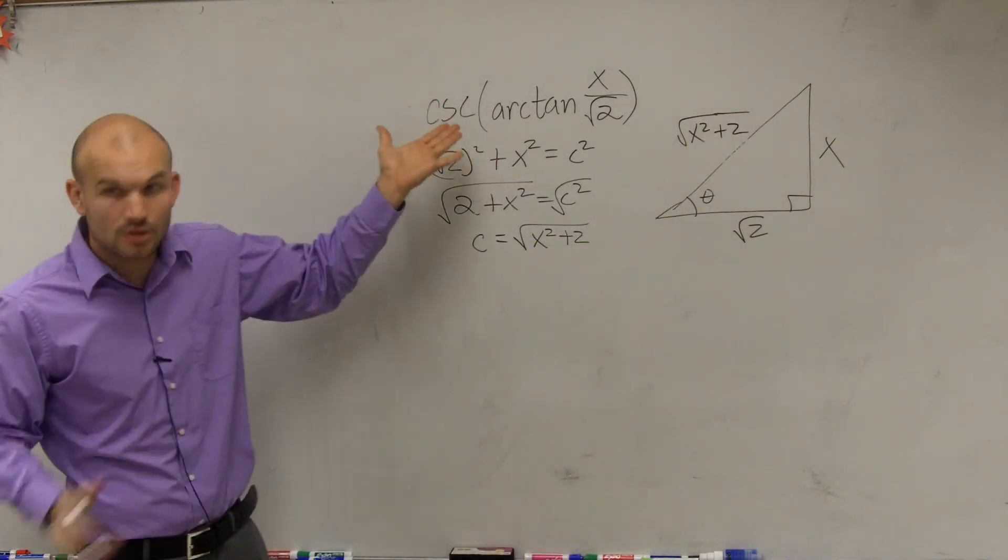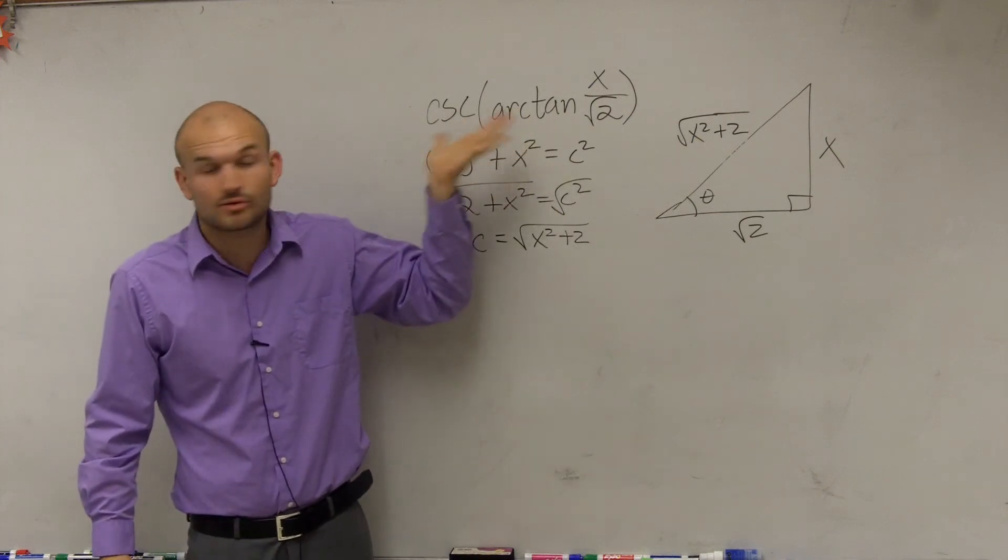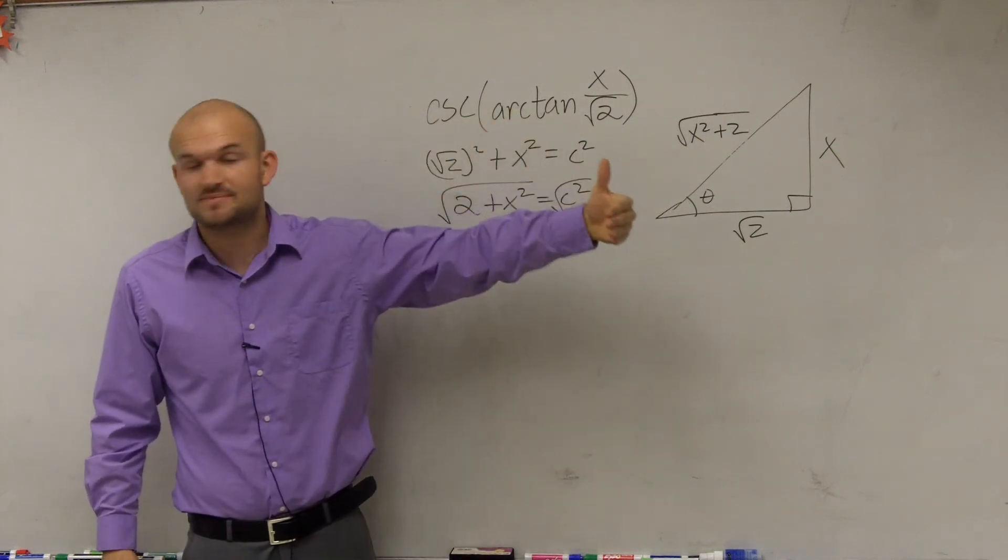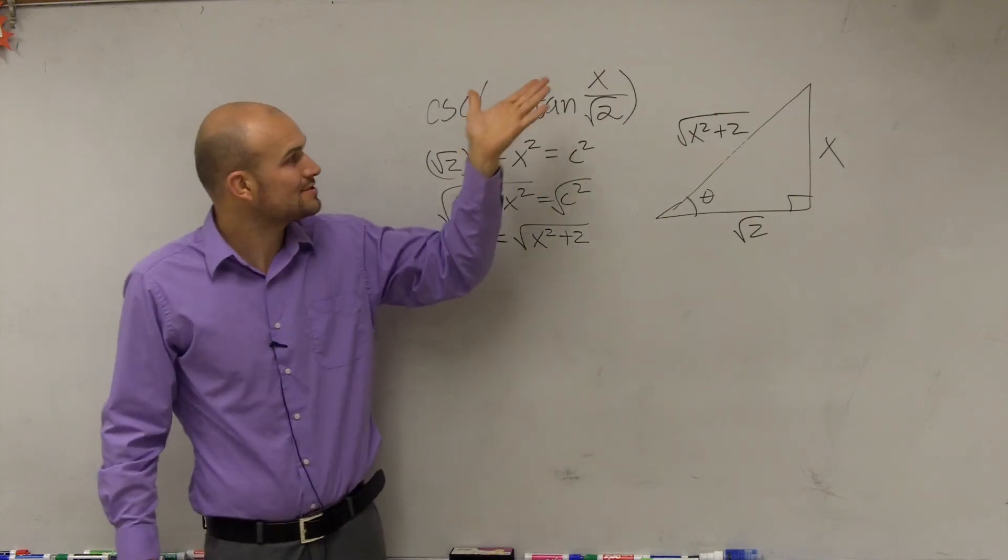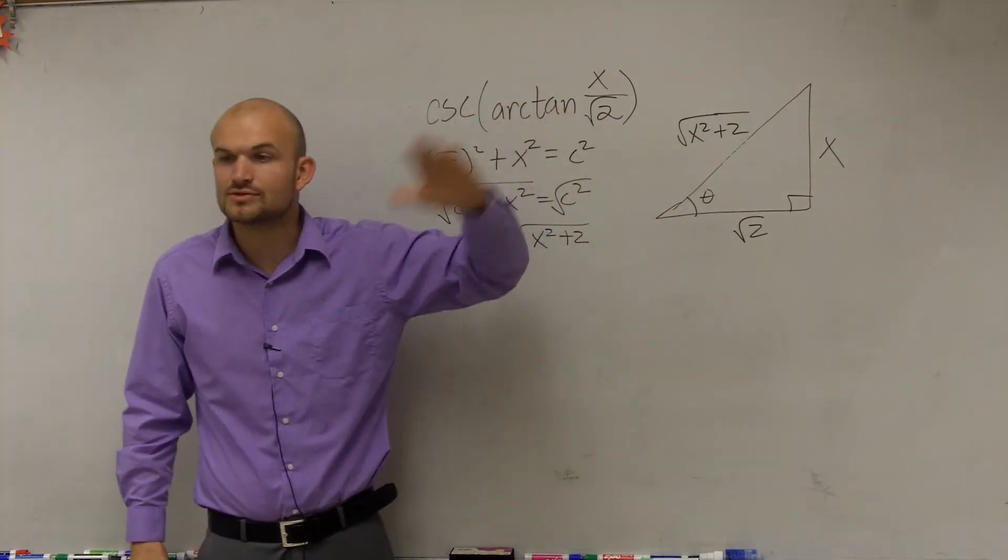Now, if I want to find the cosecant, remember the cosecant is a reciprocal of sine. Sine means opposite over hypotenuse. So the cosecant is going to be hypotenuse over opposite.